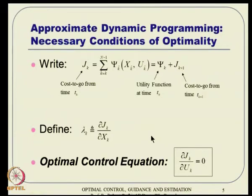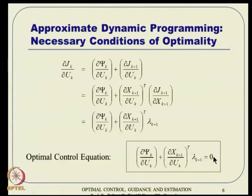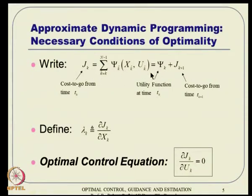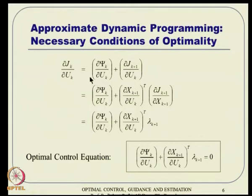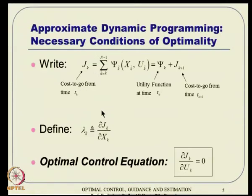Like dynamic programming, we define lambda_k as del J_k by del x_k. The optimal control equation comes from the necessary condition that del J_k by del u_k must equal zero. Since J_k equals psi_k plus J_{k+1}, the partial derivative del J_k by del u_k has two terms: a direct derivative of psi_k and the chain rule term through J_{k+1}, because applying control u_k perturbs x_{k+1} and J_{k+1} is a function of x_{k+1}.